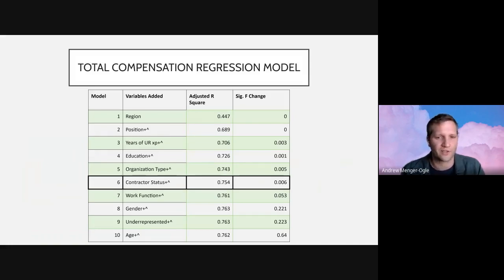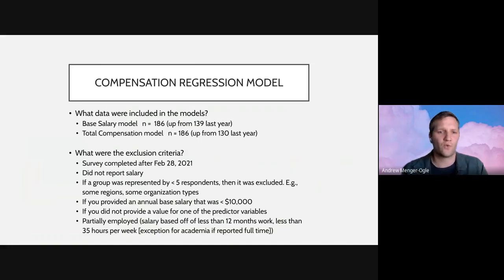When we look next at the total compensation, the order at which those variables come in, it's the same order and it's essentially the same model, just with different betas. And the ultimate adjusted R-squared—you know, with base salary was around 79%, here we're around like 75%. So what data were included in the model? I mean, it certainly helped this year that we had another 50 respondents that qualified to be in the model. I was very pleased about that. And then we did have some exclusion criteria that I'm listing there at the bottom. I don't need to go through all those.